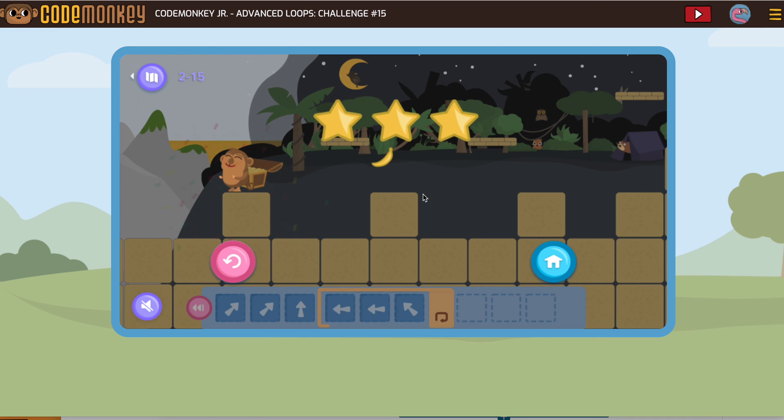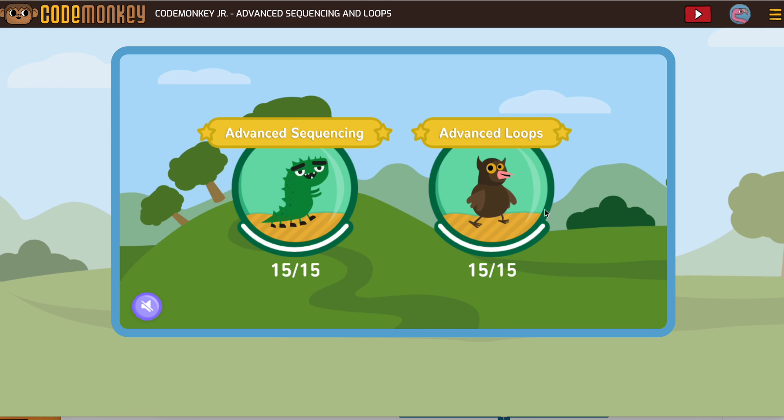And we completed the Advanced Loop section! So see here, this has a house instead of a go forward. Now if you're here, you should have finished all the Advanced Sequencing and all the Advanced Loops. So that means you're actually ready to click up here and go to your next course, which would be Conditional Loops. And you're going to learn something new. Remember, when you start a new course, you're going to watch that video first.